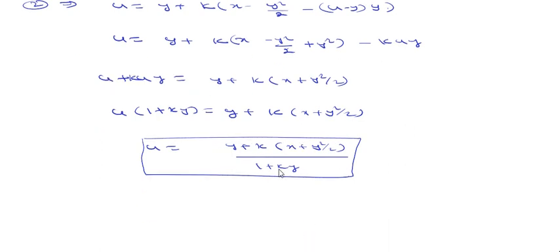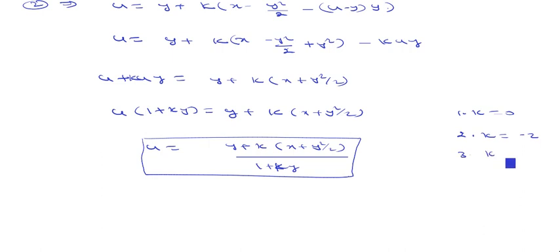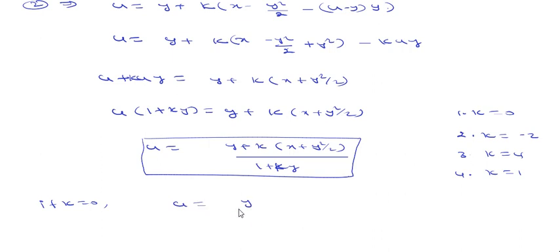Now we check for what values of k the solution u exists. The options are k = 0, k = −2, k = 4, and k = 1. When k = 0, u = y/1 = y, which exists. Therefore for k = 0, the solution exists.